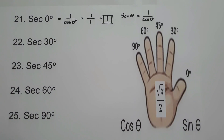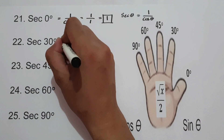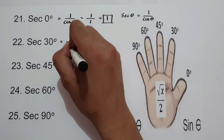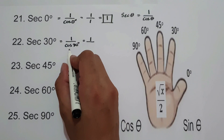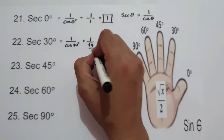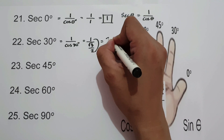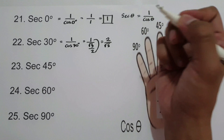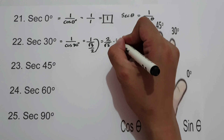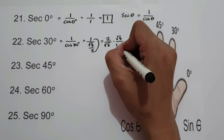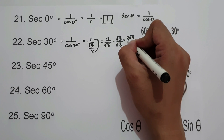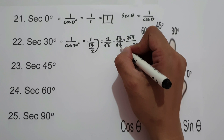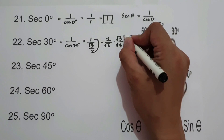For secant 30°, that is 1 over cosine 30°, which is 1 over (square root of 3 over 2), giving 2 over square root of 3. Rationalizing by multiplying numerator and denominator by square root of 3 gives 2 square root of 3 over square root of 9. Square root of 9 is 3, so secant 30° is 2 square root of 3 over 3.